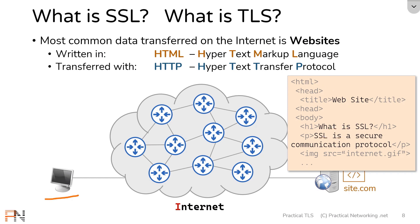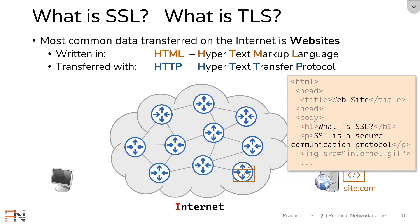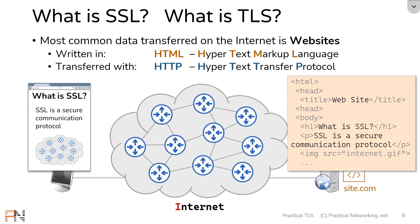In order for this client to receive a copy of this HTML page, it's going to have to send an HTTP request, which will look something like this — it's asking for the page index.html from the host site.com. This will prompt the web server to respond with a copy of that HTML page, which will then be handed from router to router across the internet where it'll arrive on the client, and the client's web browser will turn that into something a little bit more visually appealing.